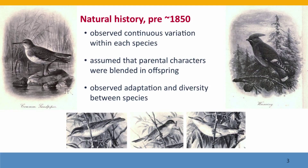Before about 1850, biologists looked at organisms in their natural environment and they observed continuous variation within each species. There was substantial variation, and biologists basically assumed that parental characters were blended in the offspring — that offspring would always be intermediate between the two parents. But they didn't really test this. They also observed that different species were very well adapted to their different environments and different lives, and they struggled to find explanations for this.